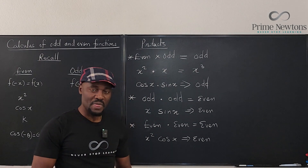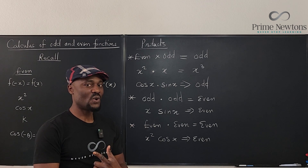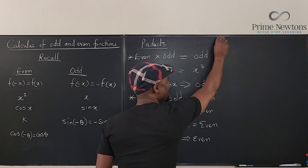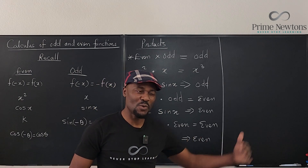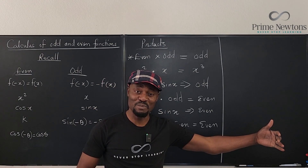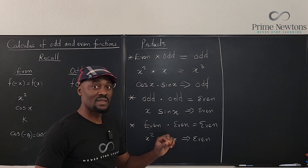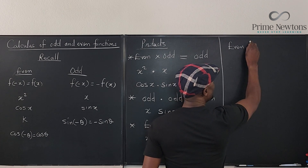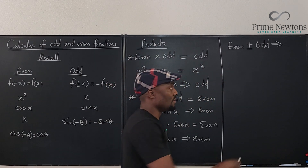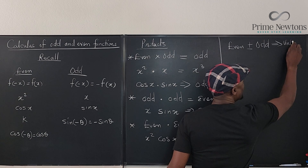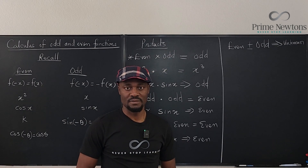What if we are adding or subtracting instead of multiplying? If we add a positive number to a negative number, we can't tell the result — it depends on which is more influential. So the sum or difference of an even and an odd function is unknown; it could be anything. Even plus or minus odd is unknown.